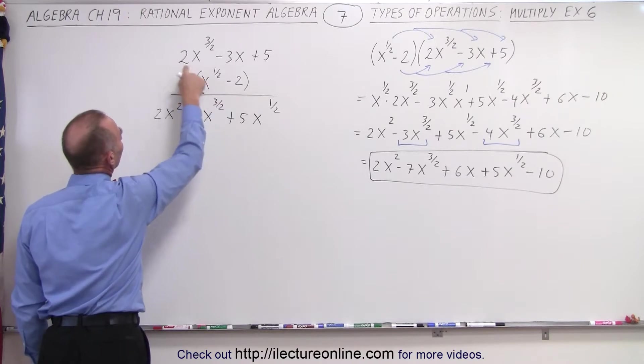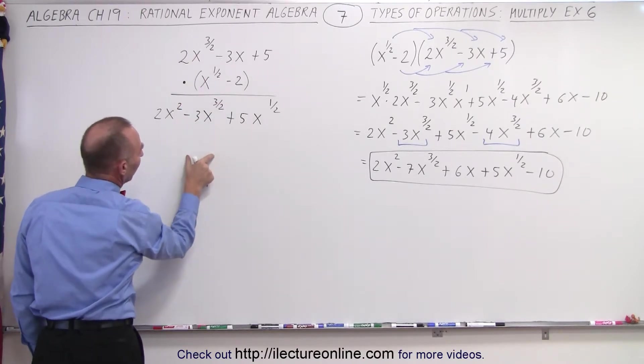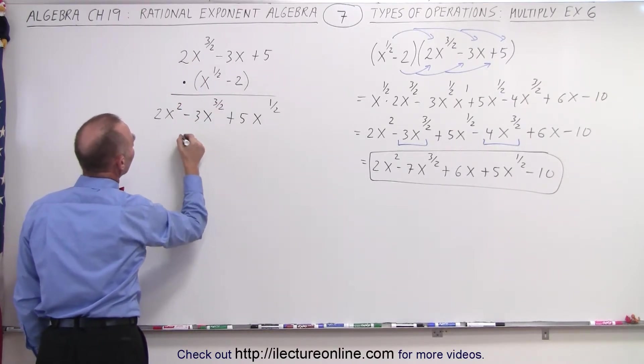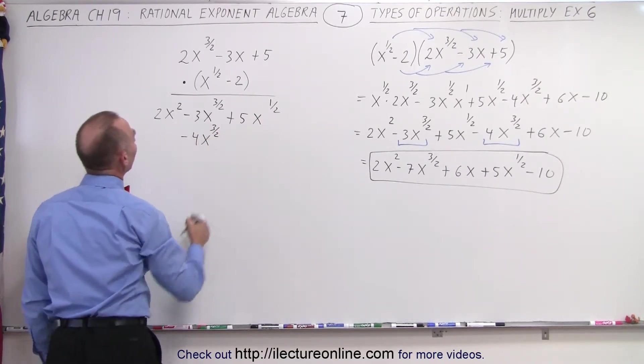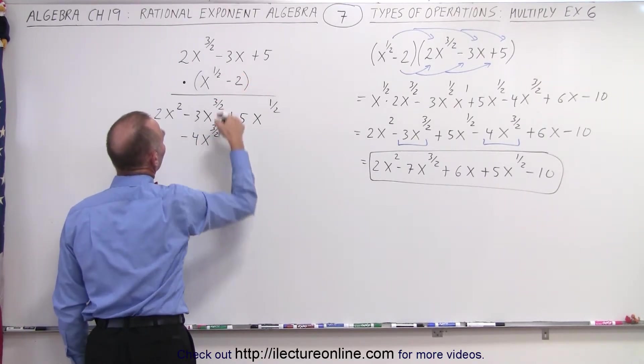Multiply this times this, I get minus 4x to the 3 halves, and I find a column where this is the same. So this becomes minus 4x to the 3 halves. We have a minus 2 times this, which is a plus 6x.